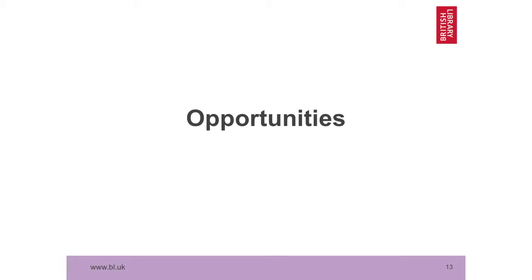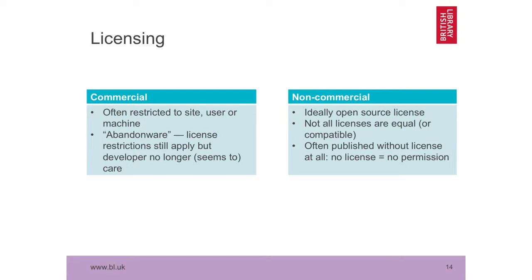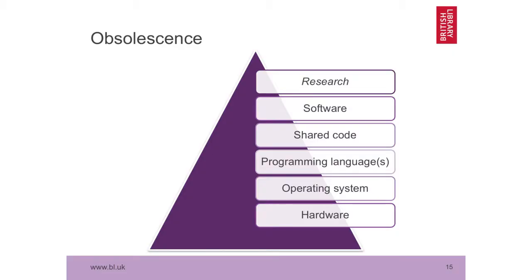This gives us some opportunities in libraries. Licensing: we have expertise in intellectual property and copyright. A lot of researchers know they should understand these things but don't always have the detailed knowledge to know how they can use a piece of software or how they ought to release it. A lot of the knowledge we have around the content we're more familiar with does translate into helping researchers with software licensing. Obsolescence: the research we're doing is very digital, built upon an entire deep stack of different bits of technology, all of which need to be working correctly for that research to be reproducible.